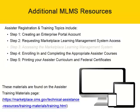Additional MLMS resources: Assister registration and training topics include Step 1: Creating an Enterprise Portal Account; Step 2: Requesting Marketplace Learning Management System Access; Step 3: Accessing the Marketplace Learning Management System; Step 4: Enrolling in and completing the appropriate assister courses; Step 5: Printing your assister curriculum and Federal certificates. These materials are found on the Assister Training Materials page at https://marketplace.cms.gov/technical-assistance-resources-training-materials-training.html.